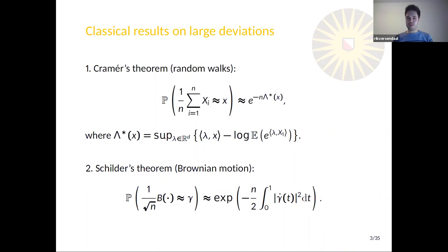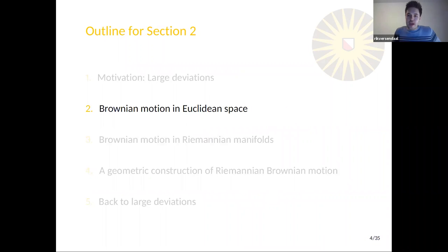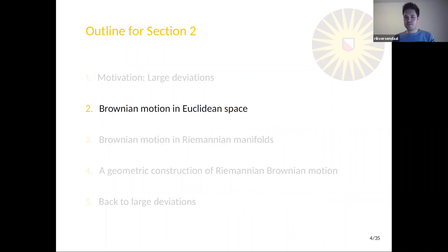These are some of the classical results from large deviations that I have been studying in Riemannian manifolds, and we will get back to this later when we go over the construction of Brownian motion. The main goal of the next part is to figure out how to define and construct a Brownian motion in a manifold. In order to do this, it might be good to have a look at what Brownian motion actually is in Euclidean space, and see if we can find certain properties or definitions that can also be used in Riemannian manifolds.